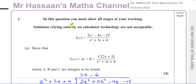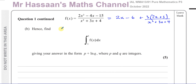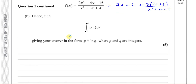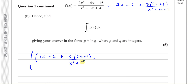Now for part B: find the integral of f(x) between 3 and 5. We've split the function into the mixed number form. That's the form we can use to integrate, because the original fraction is not easy to integrate directly. So we integrate 2x minus 6 plus 3 times (2x plus 3) over (x squared plus 3x plus 4), with respect to x, between the limits of 3 and 5.